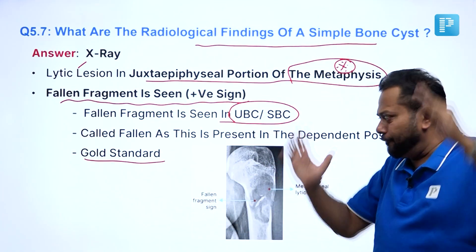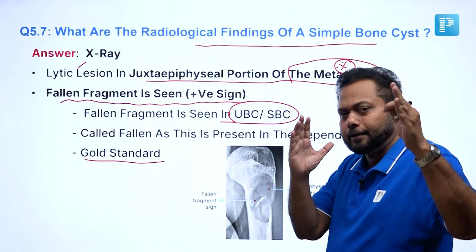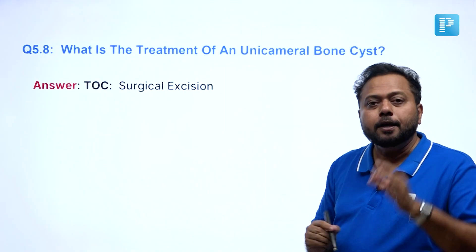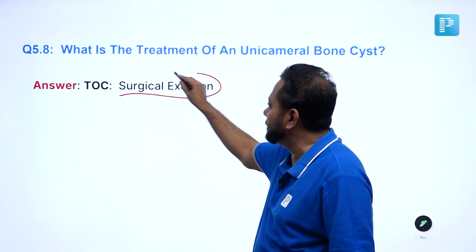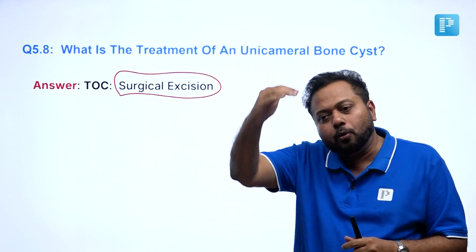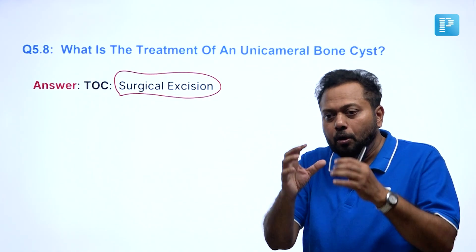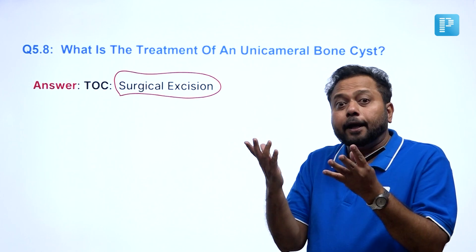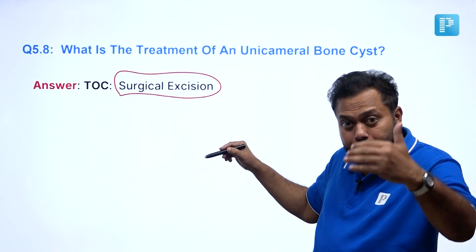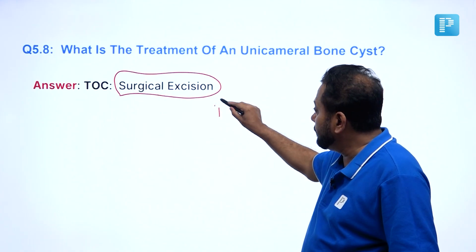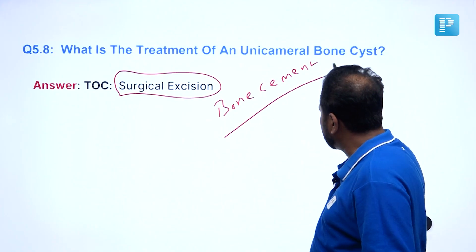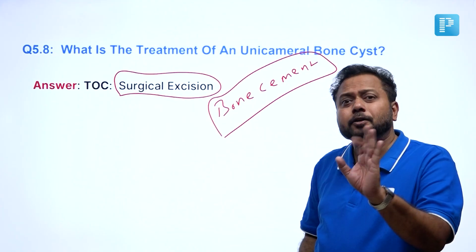We have completed the features and the radiological characteristics. Finally, the treatment of choice is complete surgical excision. Since it is a large lytic lesion, you completely excise and scoop it out. The bone becomes weak, so sometimes you may have to fill the excavated area with bone cement. This depends upon the size, but the treatment of choice is complete excision.